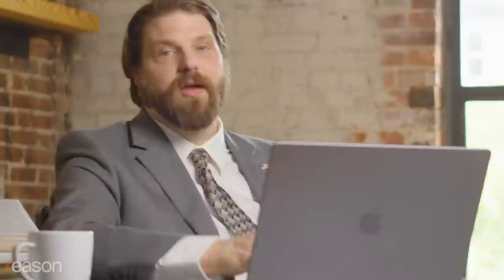Oh, that's a good idea. All I have to do is set the party slider and choose whether I want to appeal to the country or my base.